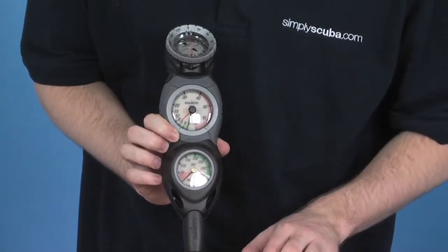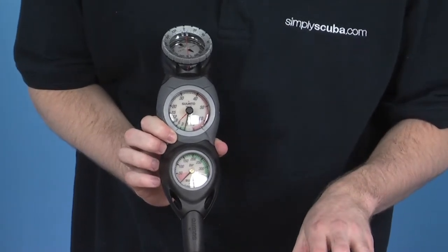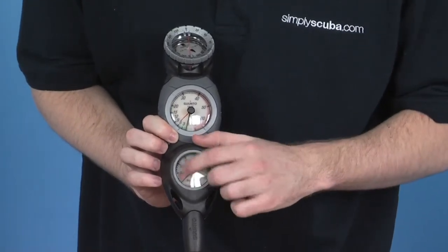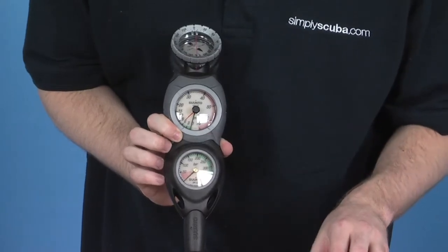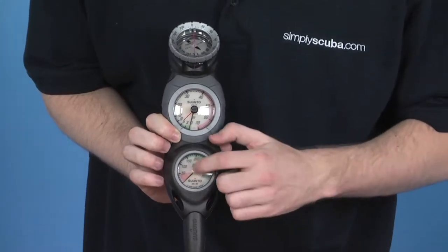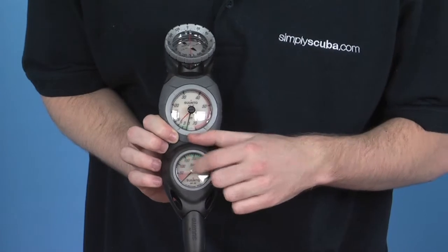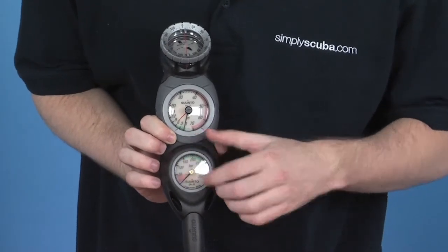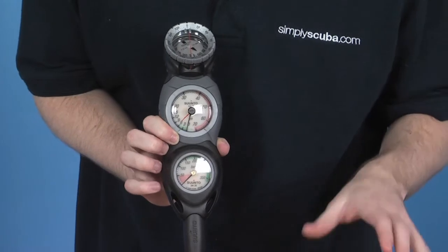Let's take a look at the pressure gauge first, which runs from 0 to 350 bar. The lower air pressure from 0 to 50 is clearly indicated with a series of red dots, which you'll be able to see on the video. This easily shows that you are low on air.